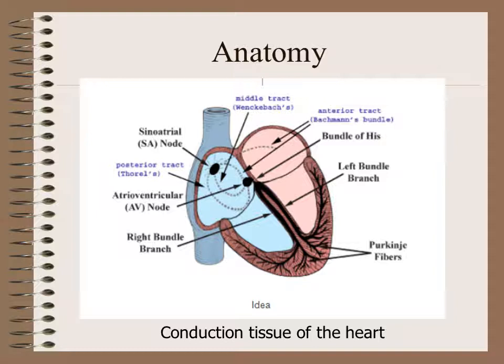If we look at the anatomy of the conducting system, the important components include the sino-atrial node, which is the main pacemaker of the heart. There are around 5,000 cells, located at the root of the superior vena cava. The second important component is the AV node. The third is the bundle of His, which branches into the left bundle branch and the right bundle branch.